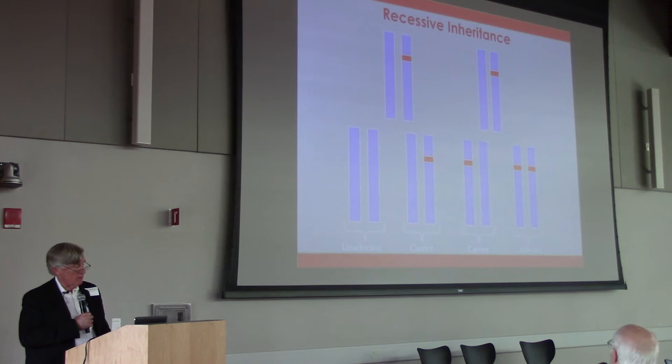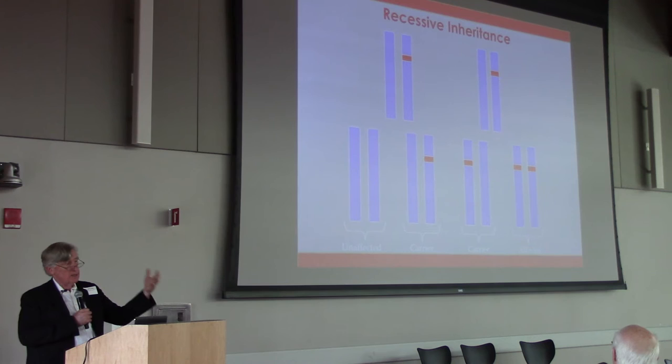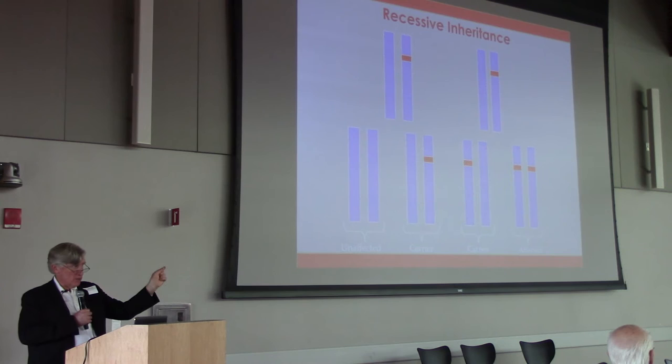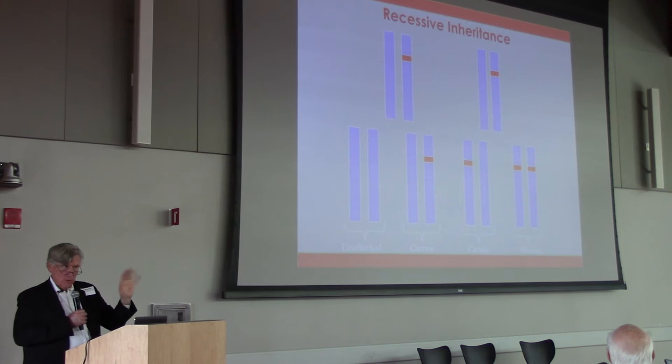Mom, dad, and the other siblings have no neuropathy, but one out of four siblings is going to have a neuropathy. In this case the gene is not causing a new toxic problem — it's simply that the individual is missing the normal function of that gene. In dominant inheritance you have too much of something damaging; in recessive you have an absence of something you need.